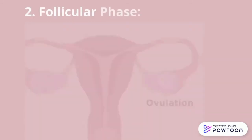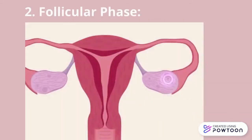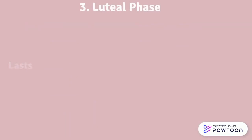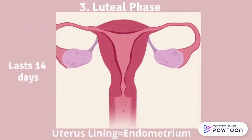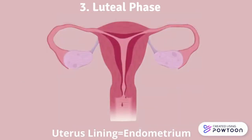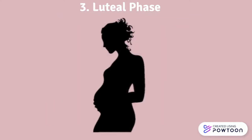Followed by the menstrual phase is the follicular phase, which is a 9-day phase. During this phase, 1 or 2 mature eggs are released into the fallopian tubes — this is also known as ovulation. Next is the luteal phase, which lasts 14 days. During this phase, the uterus lining, called the endometrium, thickens to support the fertilization of the eggs and help support them through pregnancy.